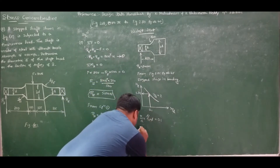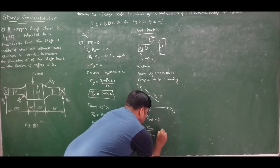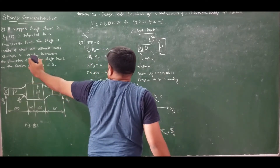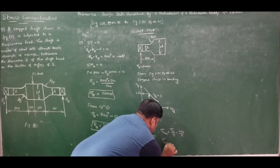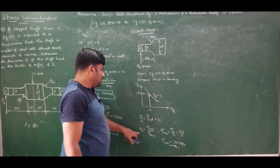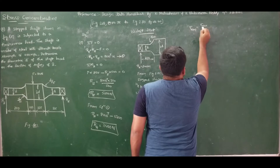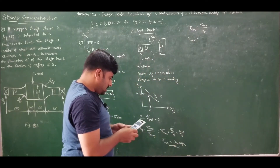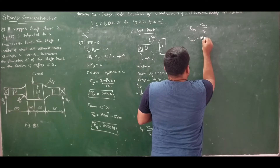Using the definition of stress concentration factor: KT = σ_max / σ_nominal, where σ_max = σ_ultimate / factor of safety = 400 / 2 = 200 MPa. Therefore σ_nominal = σ_max / KT = 200 / 1.74 = 114.94 MPa.